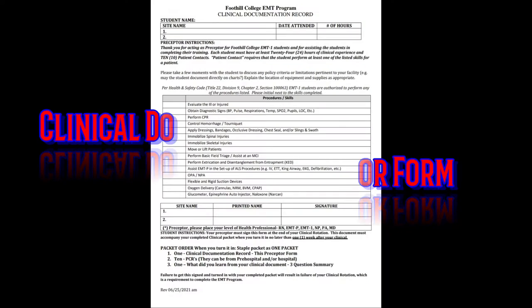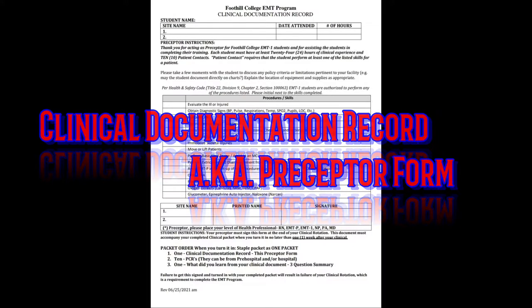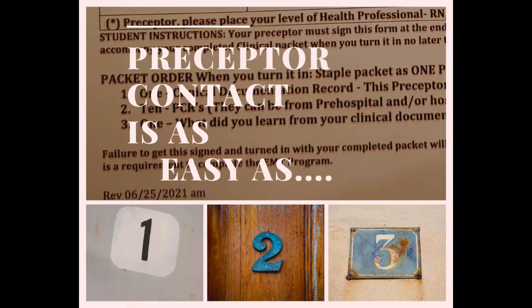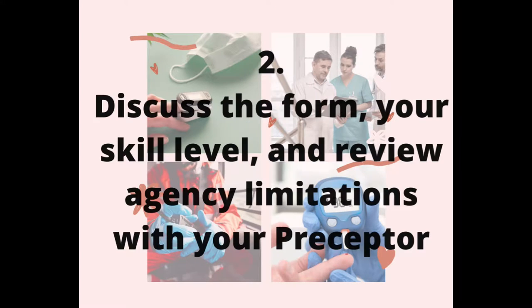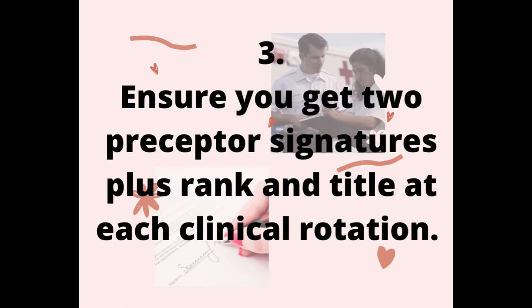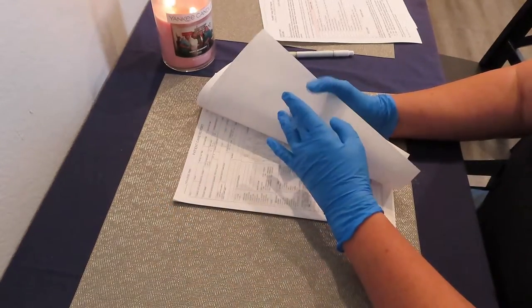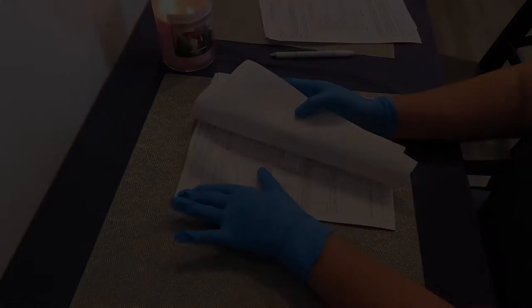It is important to bring a hard copy when the EMT student arrives at their clinical rotation. Remember three simple steps: Step one, bring a hard copy of your clinical documentation record. Step two, show the preceptor the form and discuss your skill level and limitations. Step three, ensure that you get your skills signed off and you acquire your preceptor's name, initials, and rank before you leave your rotation.